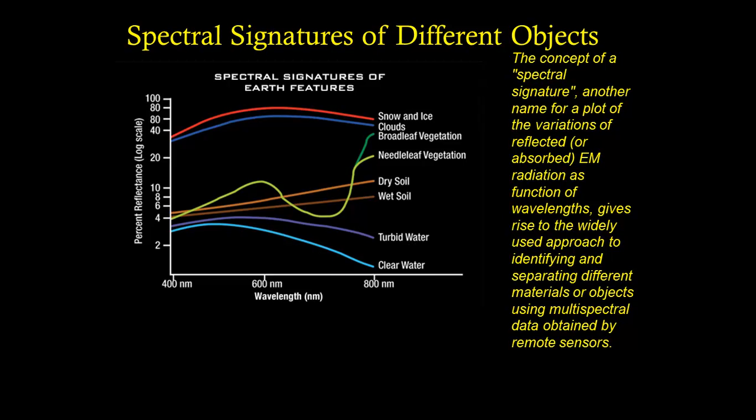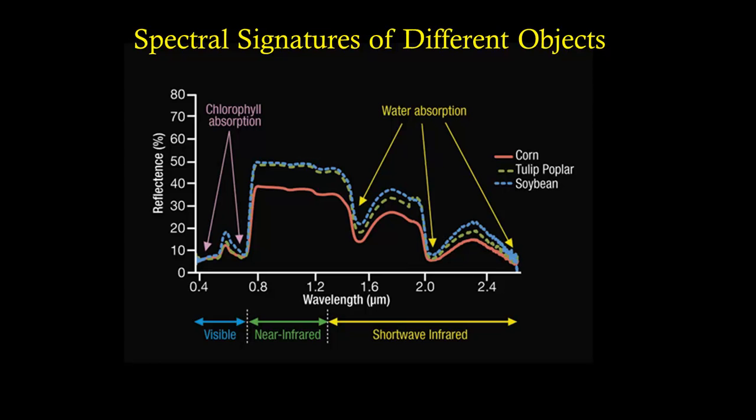There's also shown a difference between dry soil and wet soil. And then at the bottom, with the lowest relative reflectance, we have turbid water versus clear water. This is useful for identifying and separating different materials or objects using multispectral data obtained by remote sensors.